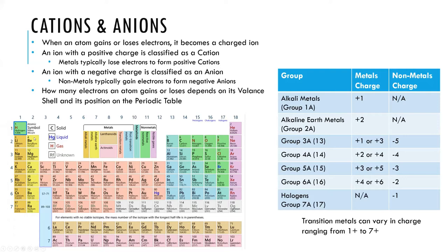Alkaline earth metals will lose two electrons and have a plus two charge. When you get to the main block of elements, there are both metals and non-metals. The metals will lose some electrons and generate a positive charge, while the non-metals can gain electrons and generate a negative charge. In group 3, elements aluminum through thallium could lose either one electron for a +1 charge or three electrons for a +3 charge. Group 4A or group 14, particularly tin and lead, could lose either two or four electrons. Bismuth could lose three or five, and polonium could lose four or six.